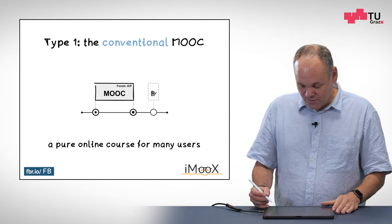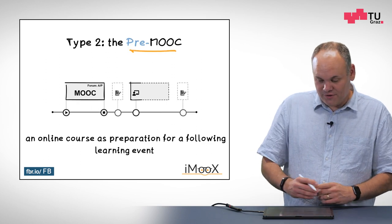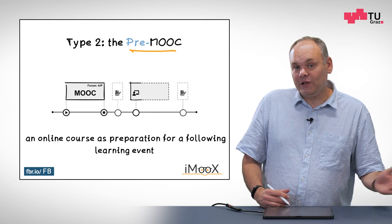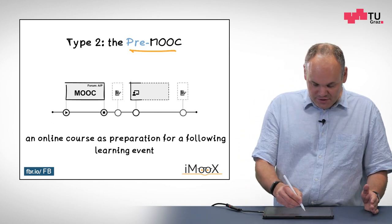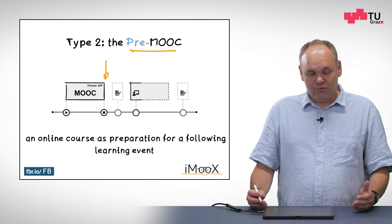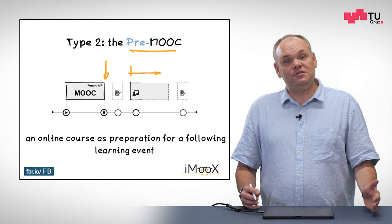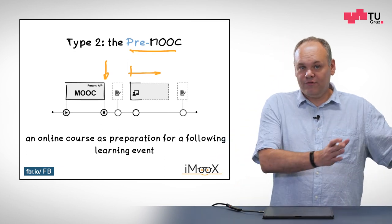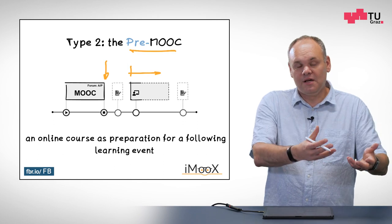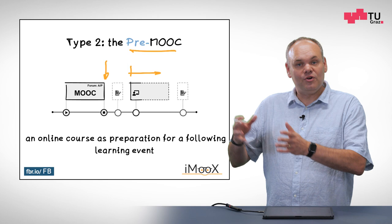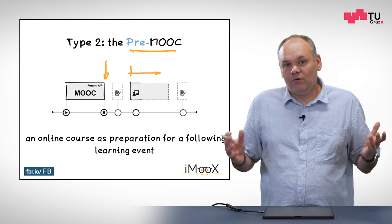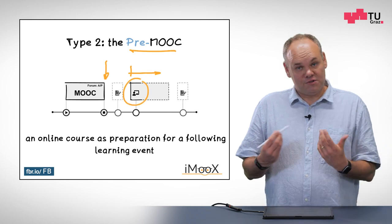Type two is the pre-MOOC. Here, teachers have students do the online course until a certain date, maybe followed by a small assessment so the teacher knows they've completed it. This becomes a precondition to come to a face-to-face session — for example, a laboratory. So you have a MOOC running in the front of a typical lecture to prepare students and give them knowledge about something they'll need in the lecture. It's an online course as preparation for a following learning event.